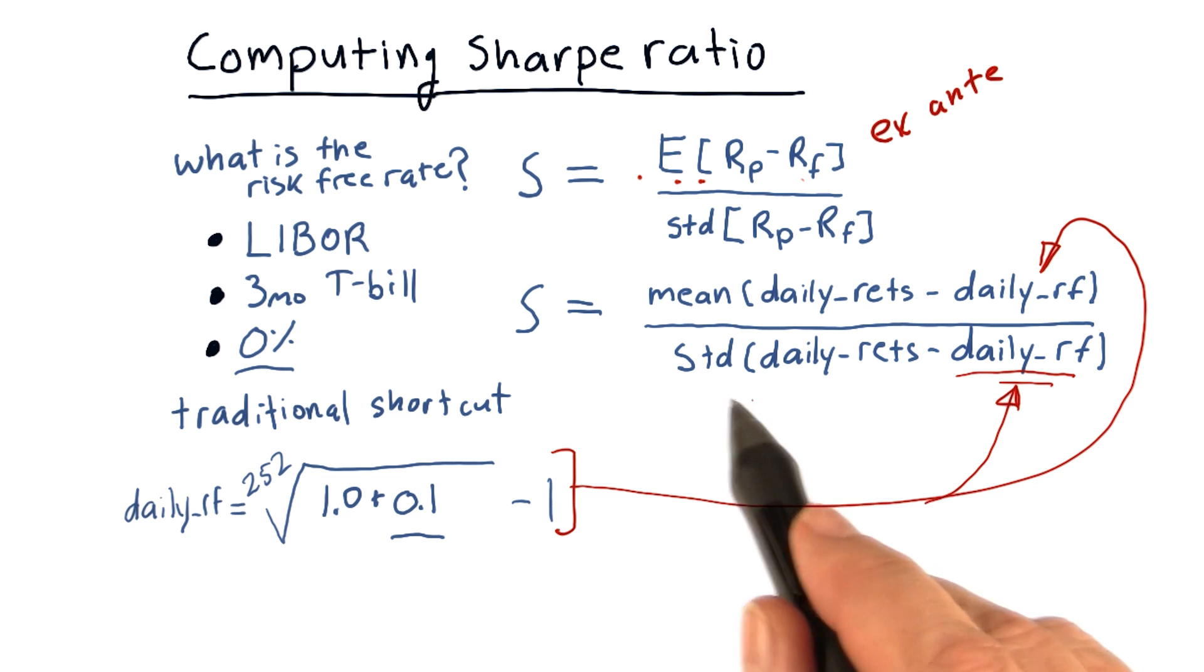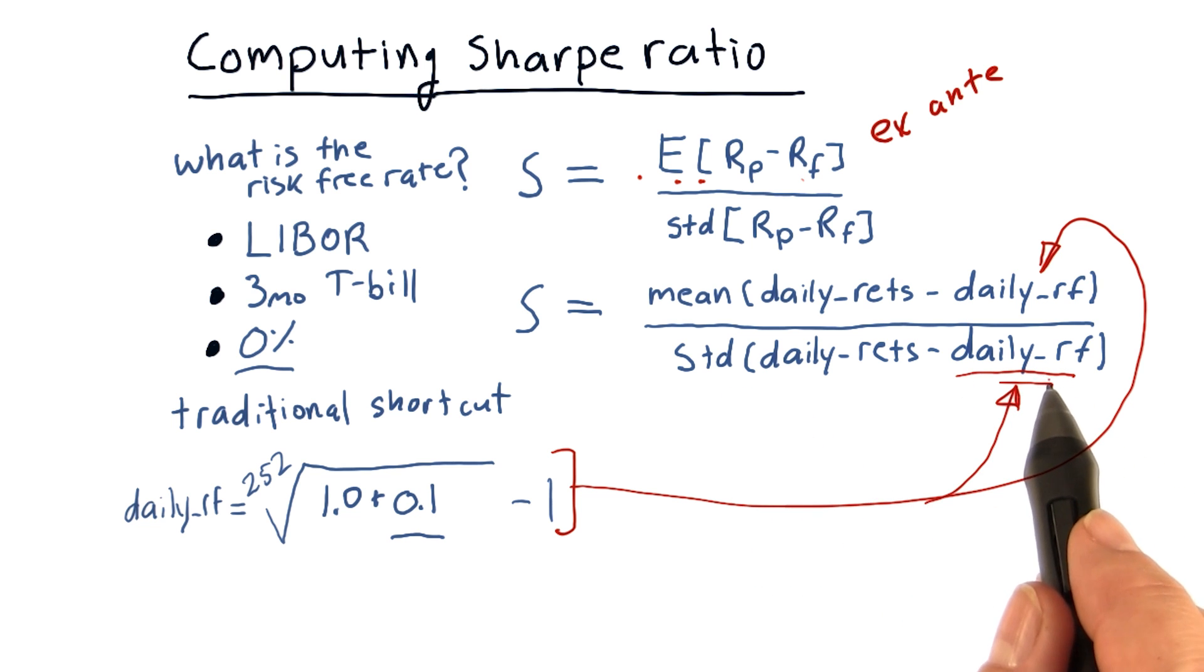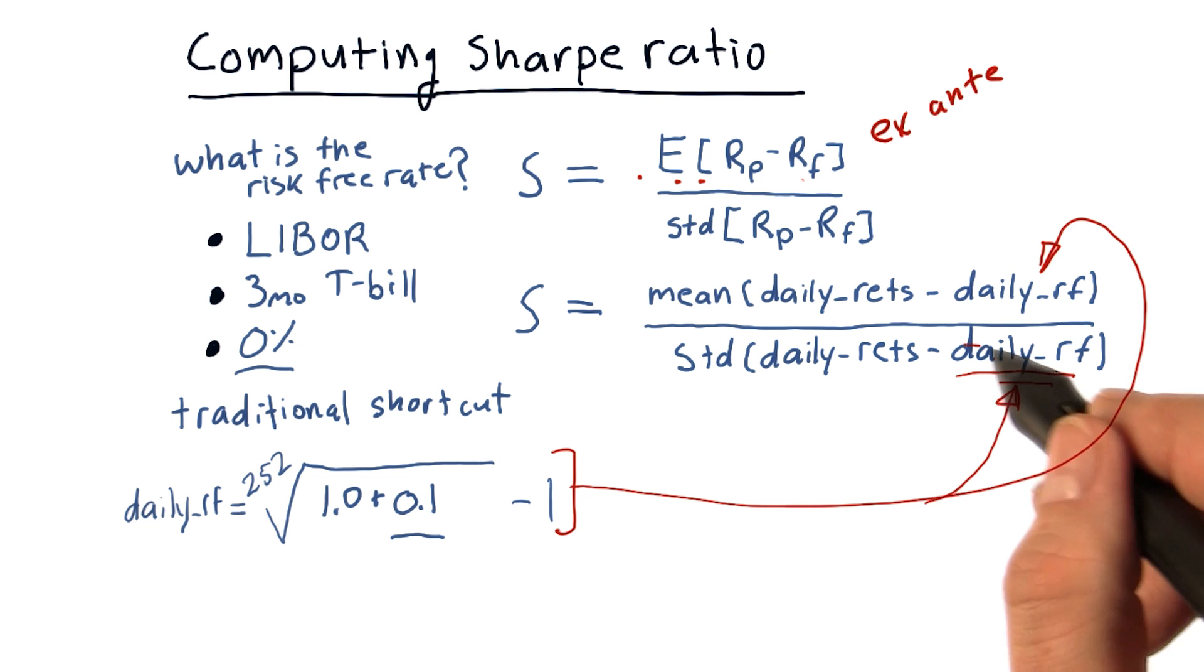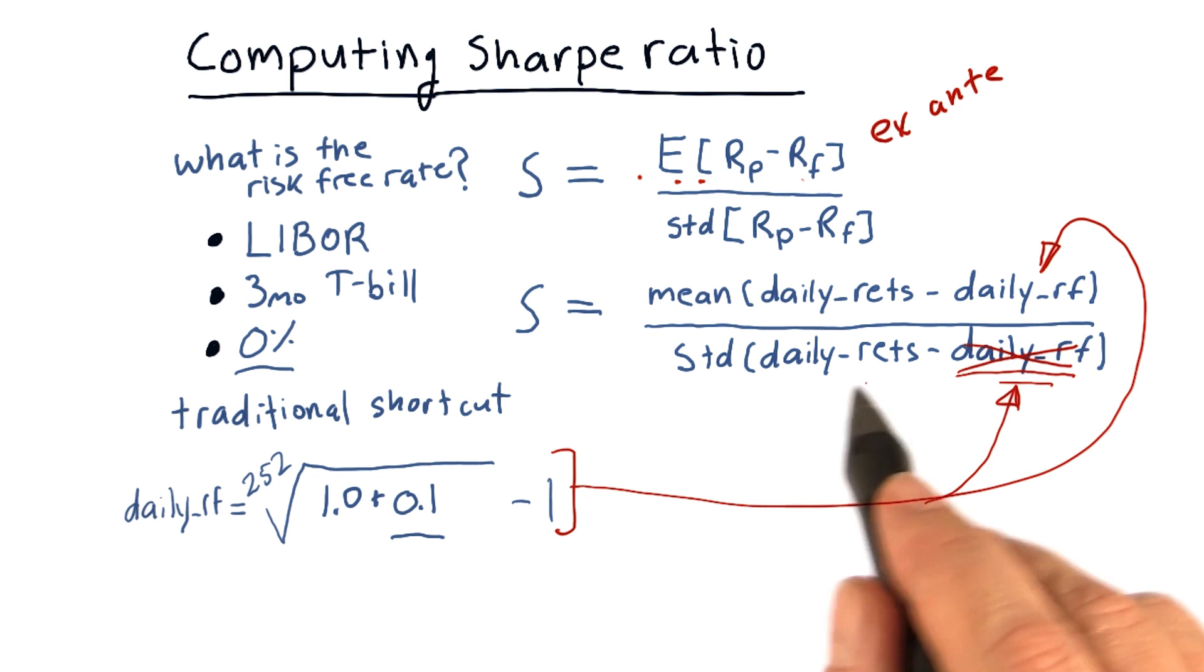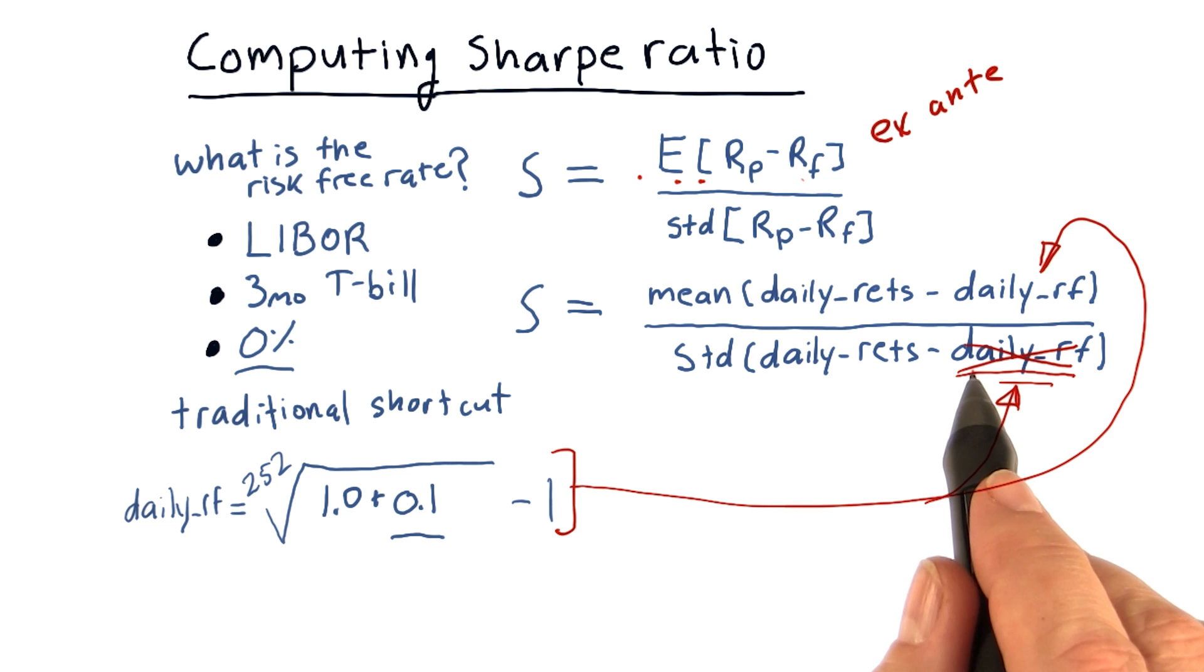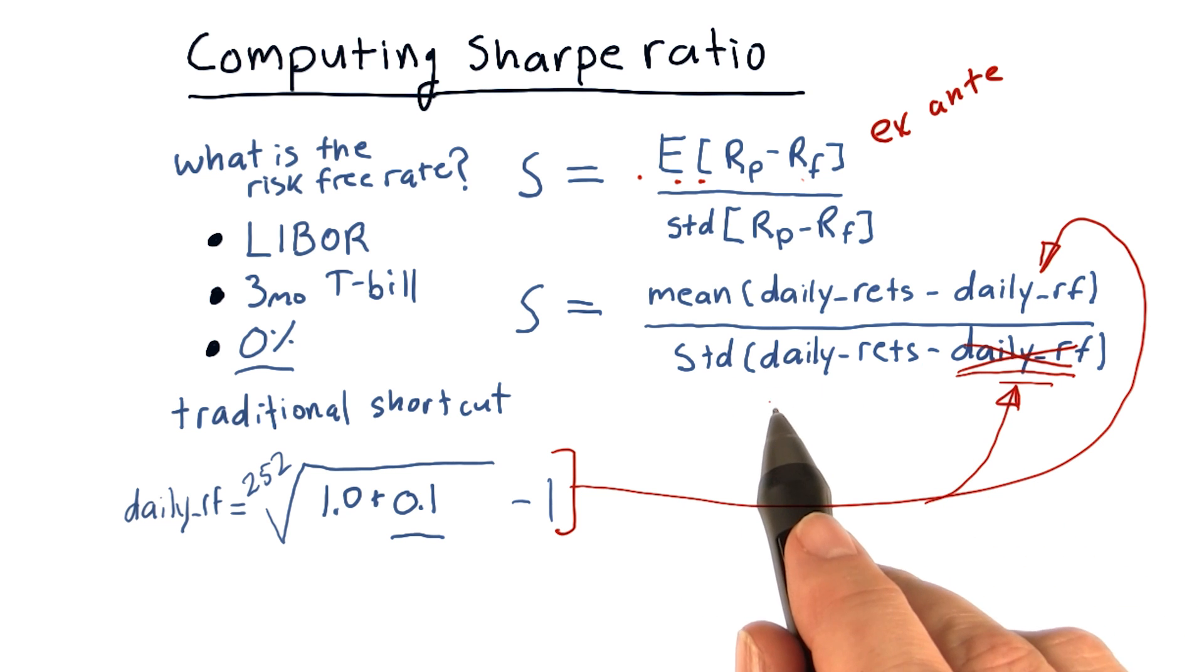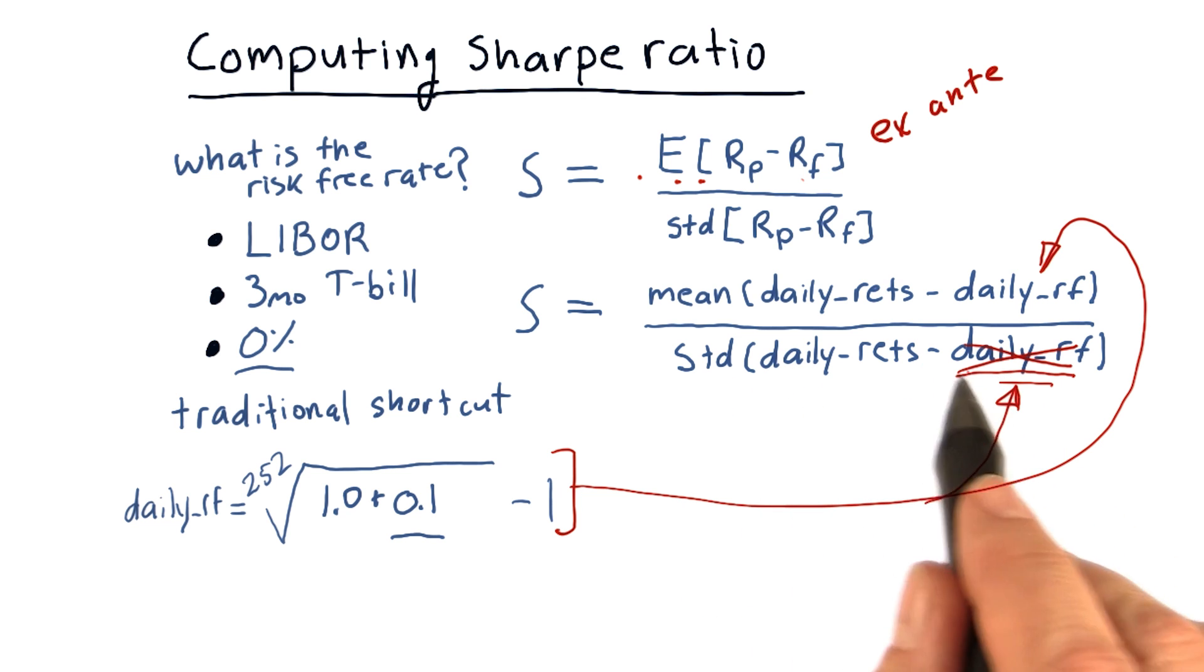So observe that if we plug a constant in here in the standard deviation calculation, we can just remove it, because a set of values minus a constant, when you calculate the standard deviation, is just as if this were 0.